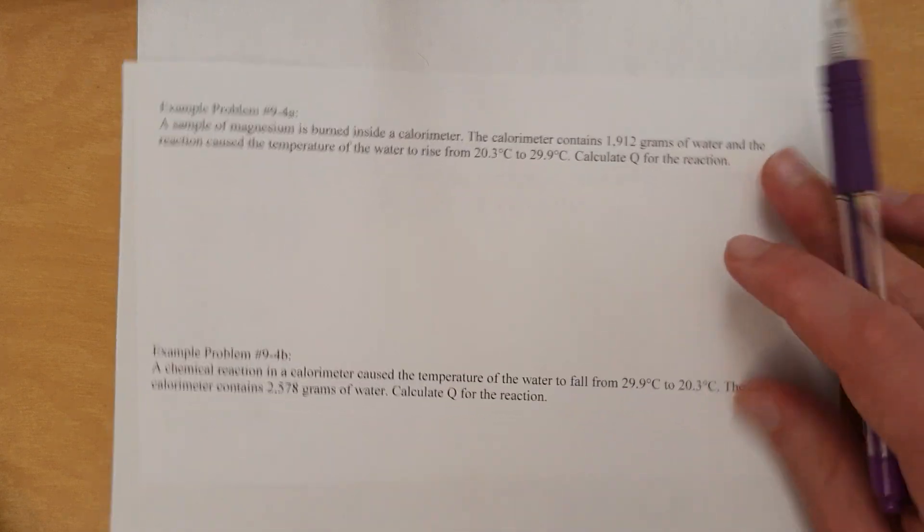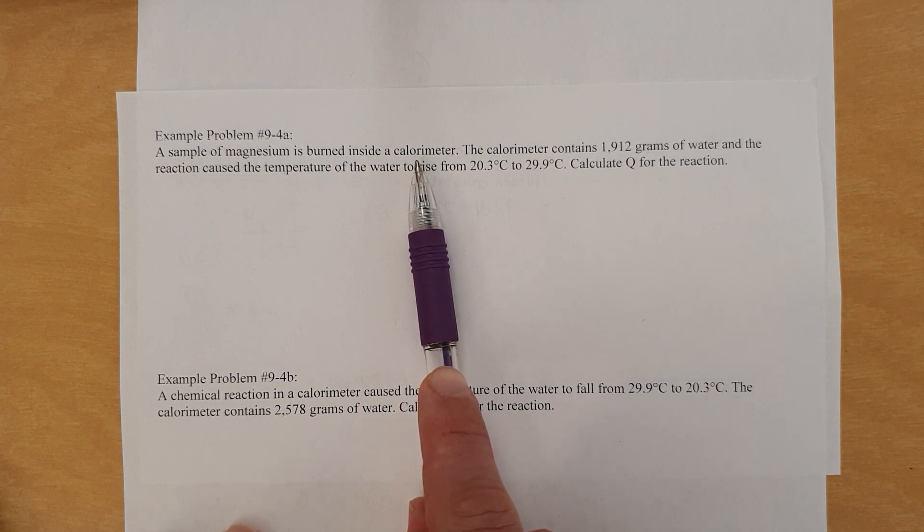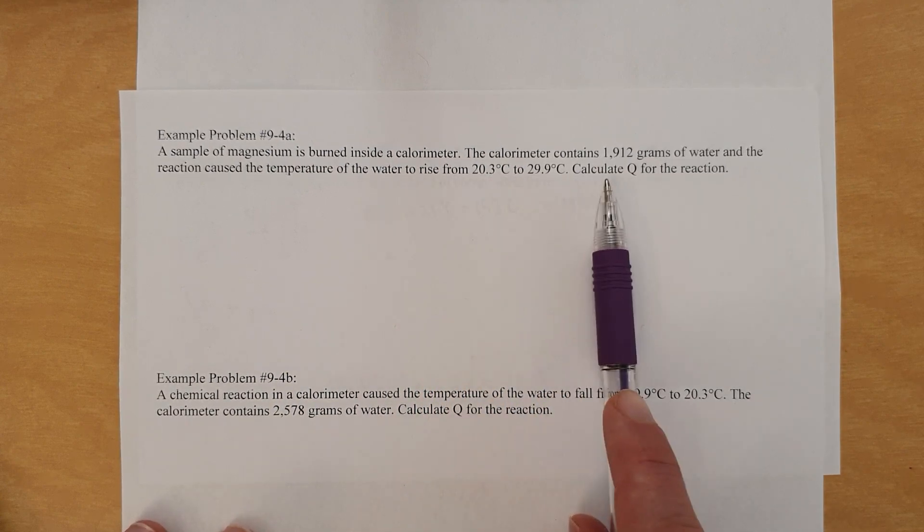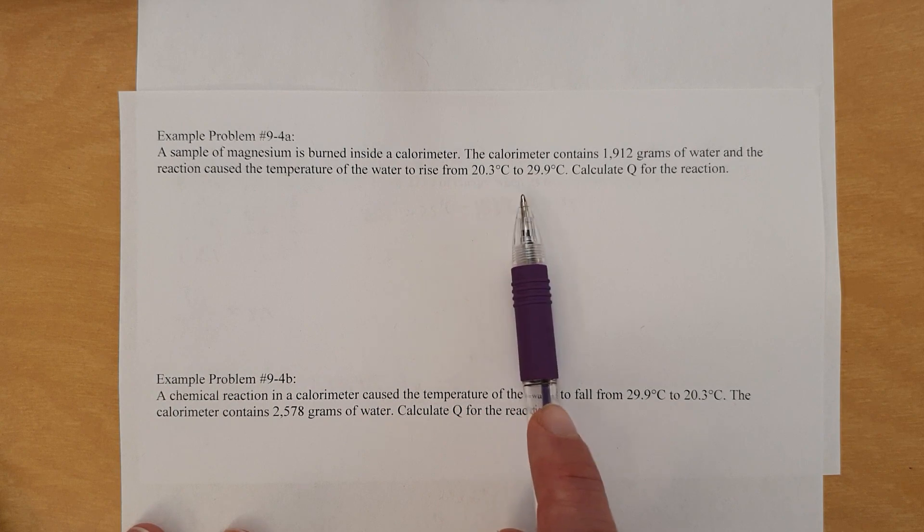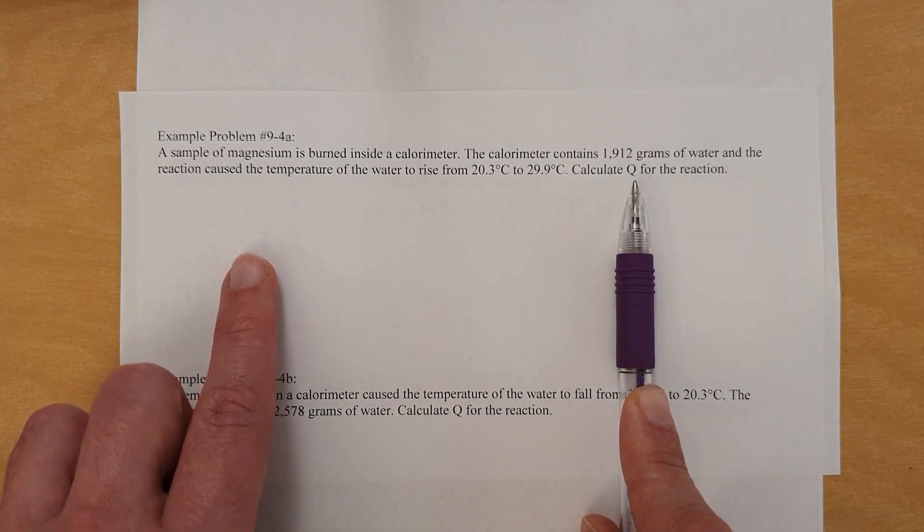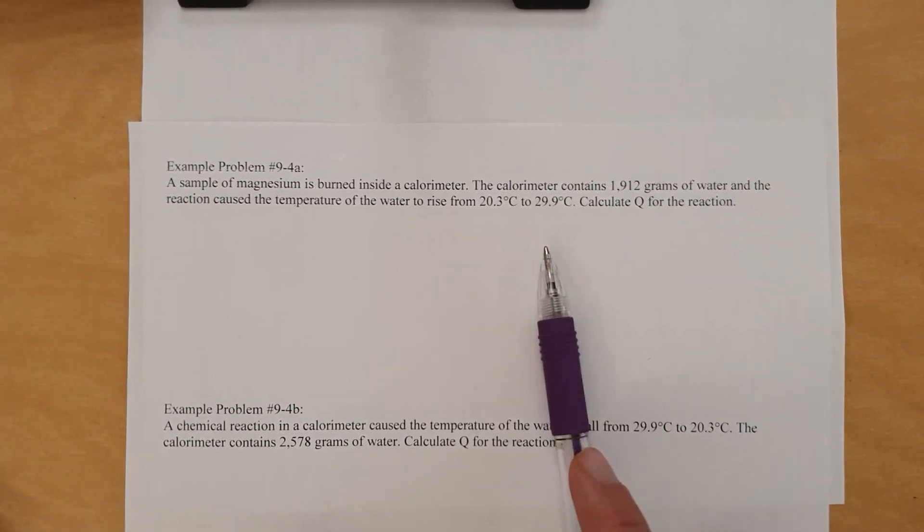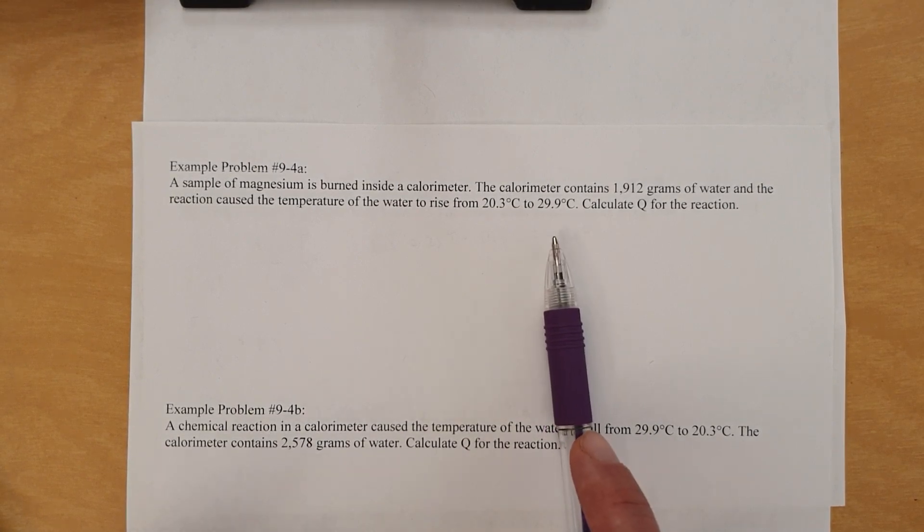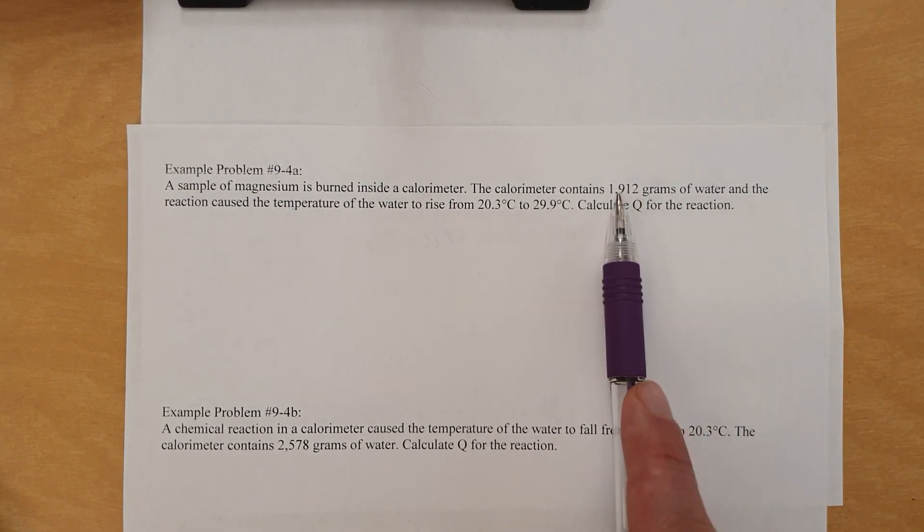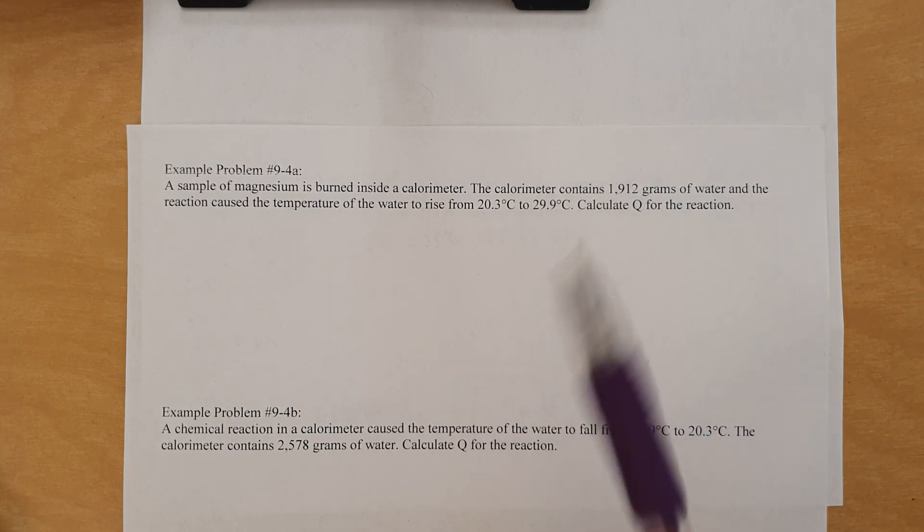All right. So that being what it is, let's look at one final example from this worksheet, and let's look at what happens with this. A sample of magnesium burned inside a calorimeter. The calorimeter contains that many grams of water, and the reaction caused the temperature to rise from that to that. Calculate Q for the reaction. Okay. So we need to find Q for the magnesium. But the problem is, first of all, magnesium is not on our list. Second of all, we don't know the specific heat capacity of magnesium. Third of all, we don't know the temperature of the magnesium because this is the mass of the water, not the magnesium. This is the temperature of the water, not the magnesium.